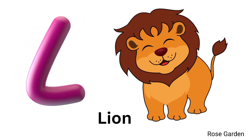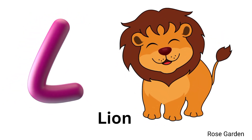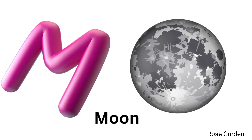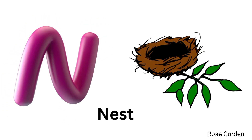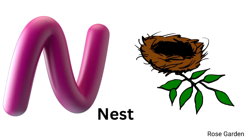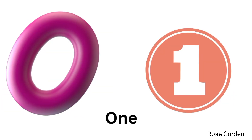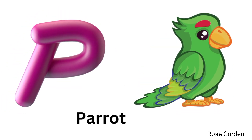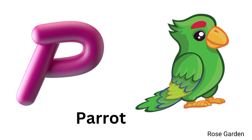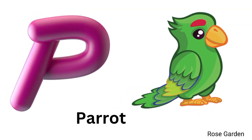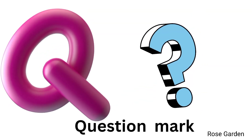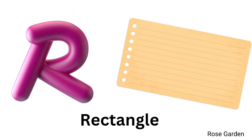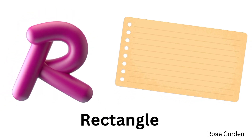L for lion. M for moon. N for nest. O for one. P for parrot. Q for question mark. R for rectangle.